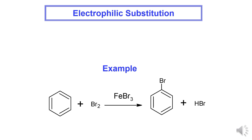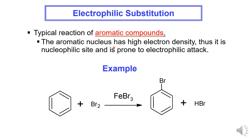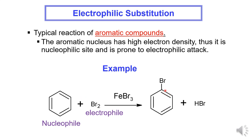B. Electrophilic substitution is a typical reaction of aromatic compounds. The aromatic nucleus has high electron density because it is a nucleophilic site, and it is acted upon by an electrophile. Example: Benzene ring acts as the nucleophilic site, acted upon by bromine molecule as the electrophile under Lewis catalyst FeBr3. The product is formed where one H from the benzene ring is substituted by a bromine atom.